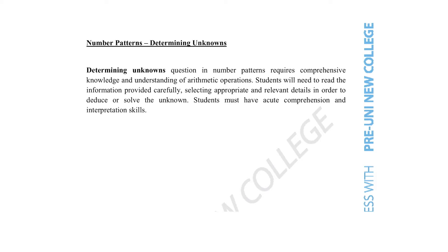Now what does all of this mean? We can see that the description has provided that we will need an understanding of arithmetic operations, and that we will be using these arithmetic operations to solve an unknown. Given the category title patterns in algebra and the classification of these questions as number patterns, we can tell that the arithmetic operations and unknowns we solve will be done through a number pattern method.